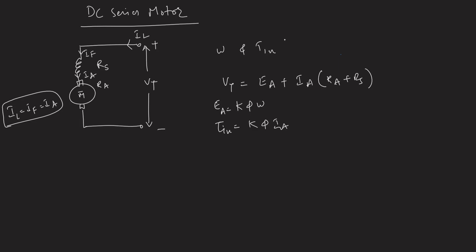Unlike in a shunt motor where the field is constant because the terminal voltage is fixed, in the series motor the field current, armature current, and load current are all the same. So a change in load causes a change in armature current as well as field current, and then flux changes along with induced EMF and every other parameter.